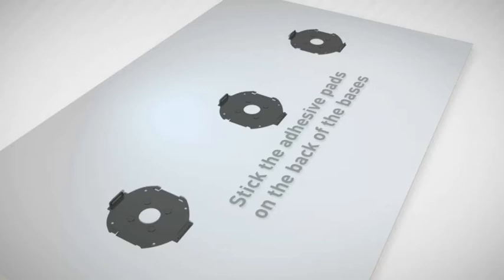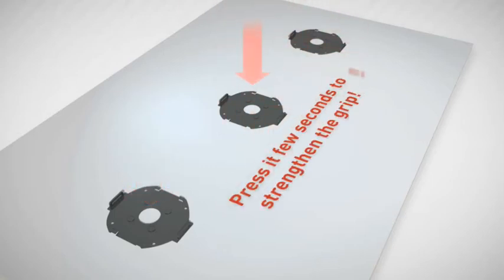Align the three bases on the back side of the panel. Place one base at each end and the third in the middle. Check that the three bases are all aligned to receive the F-ribbon. Press it a few seconds to strengthen the grip.